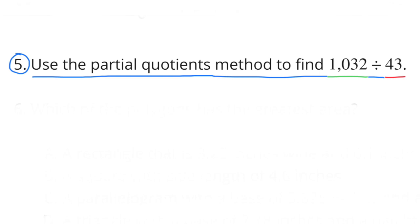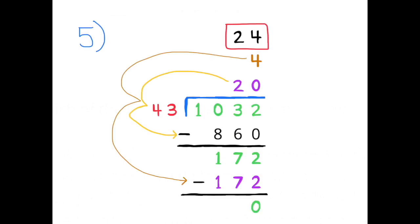Number 5. Use the partial quotients method to find 1,032 divided by 43. 1,032 divided by 43. 20 times 43 equals 860. 1,032 minus 860 is 172.